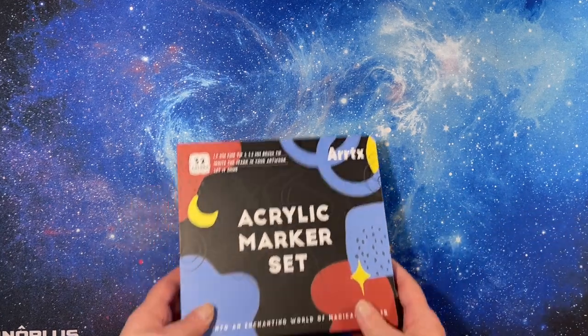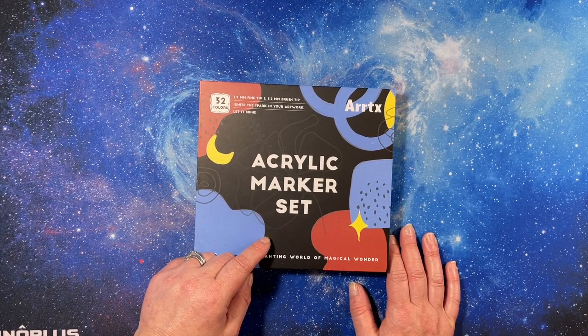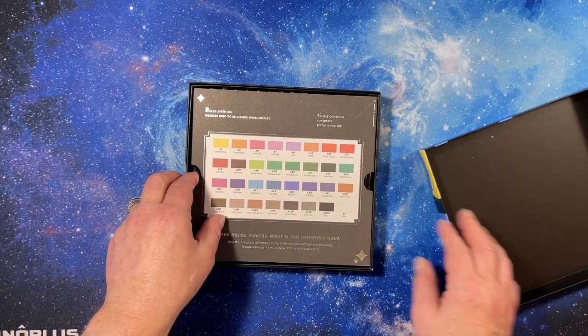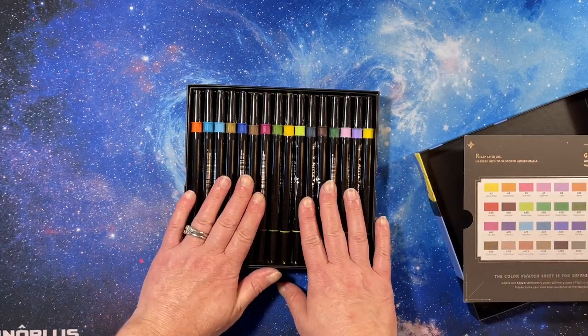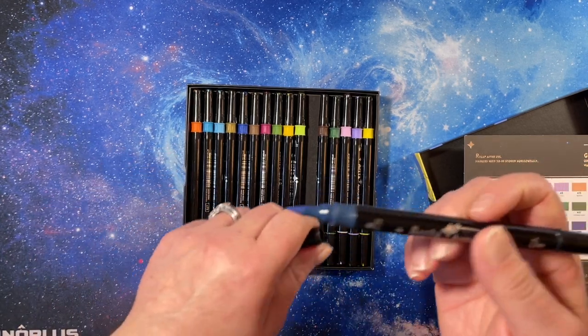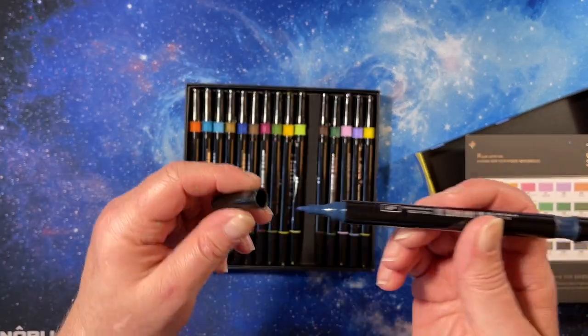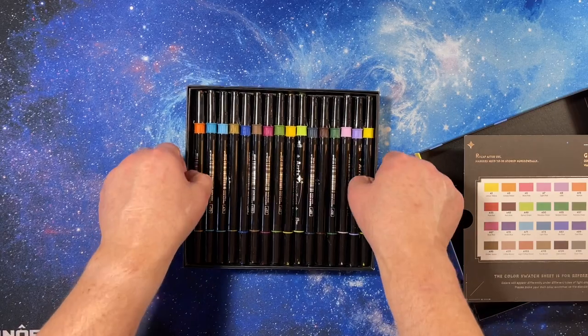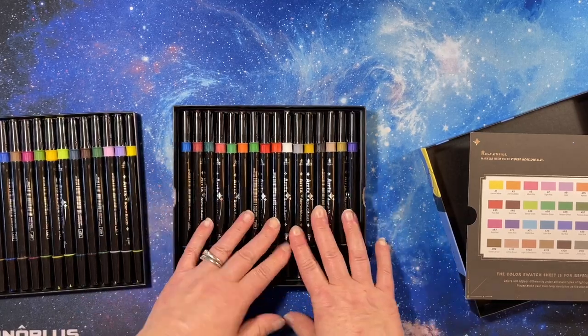I did a swatching video of these, the Artex acrylic marker set and I really like them. There's 32 of them. It comes with a card that shows you all the colors and they do have the number on them. Check out my swatching video if you want. They have a brush tip and look a lot like a Tombow marker but I love them. They're great.